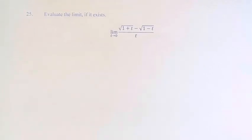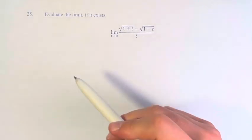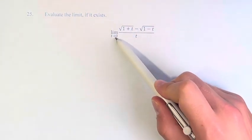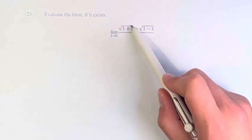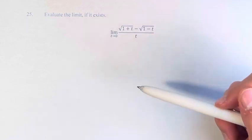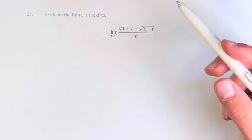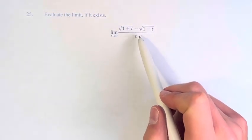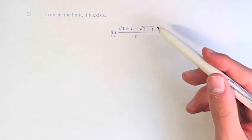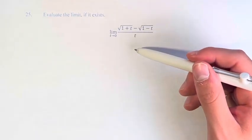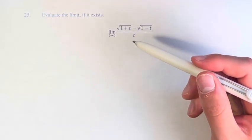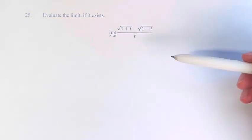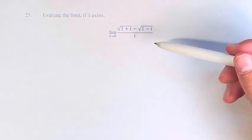Hello and welcome back to another video. In this problem, we're asked to evaluate the limit if it exists. We have the limit as t approaches 0 of the square root of 1 plus t minus the square root of 1 minus t divided by t. We can't just plug in 0 because then we'd be dividing by 0. So what we have to do is simplify this fraction by rationalizing the numerator.